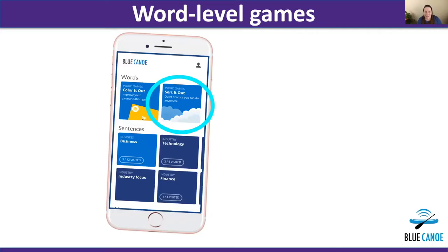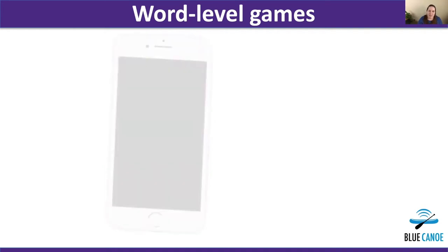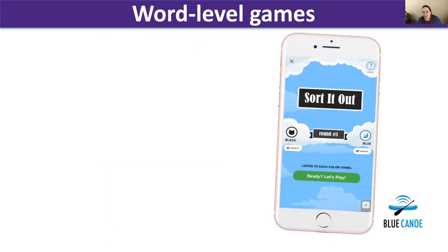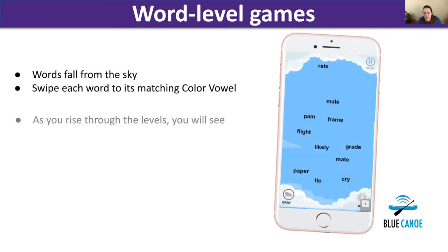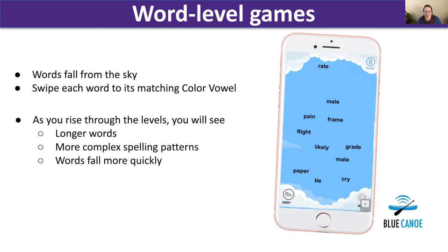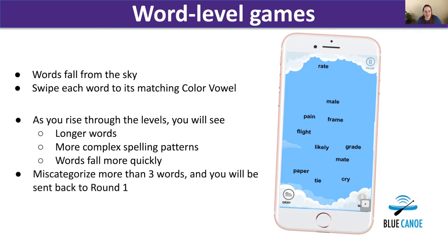We have a second word-level game called Sorted Out. As implied by the name, the learner is presented with a couple of choices — in this case, Black Cat A and Blue Moon OO — and then they start to sort words as they fall from the sky, swiping each word to match its Color Vowel. As you rise through the levels, you see longer words and more complex spelling patterns, and words fall more quickly. When you miscategorize more than three words out of 16, you are sent back to round one.